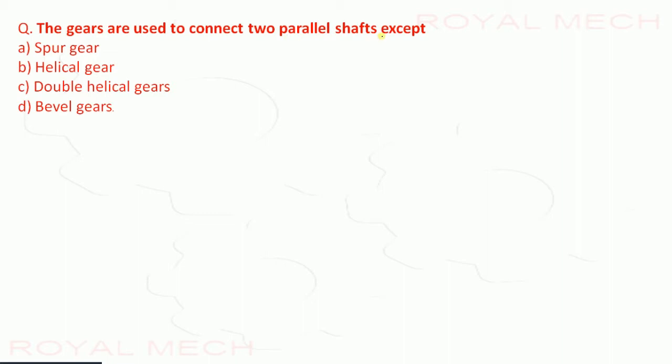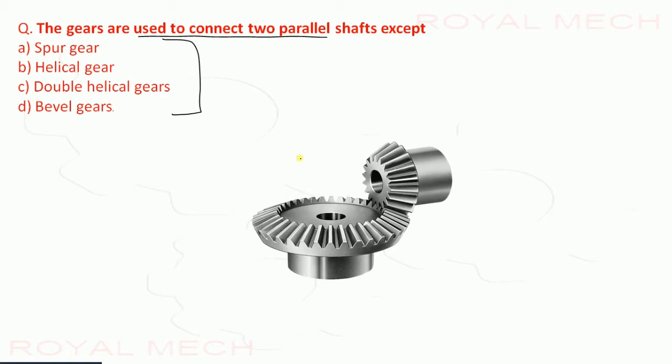Question 1: Which gear is used to connect two parallel shafts — spur gear, helical gear, double helical gear, or bevel gear? A bevel gear is used to connect shafts that are perpendicular to each other, not parallel. Therefore, option D (bevel gear) is the incorrect one, and the correct answers for parallel shafts are spur gear, helical gear, and double helical gear.